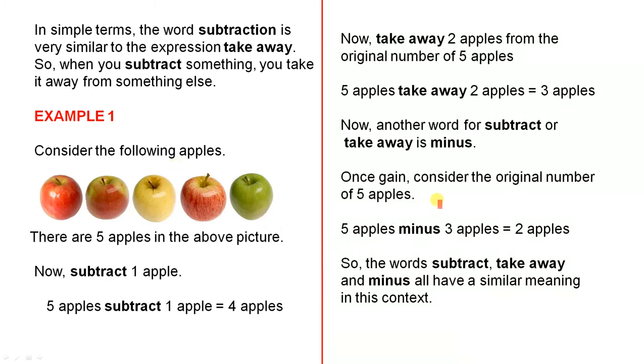Once again, consider the original number of five apples. Five apples minus three apples equals two apples. So here's the red marker. Everything to the right of the red marker disappears. The only apples we have left are the two on the left hand side. So five apples take away three apples or five apples minus three apples gives you only two apples left.